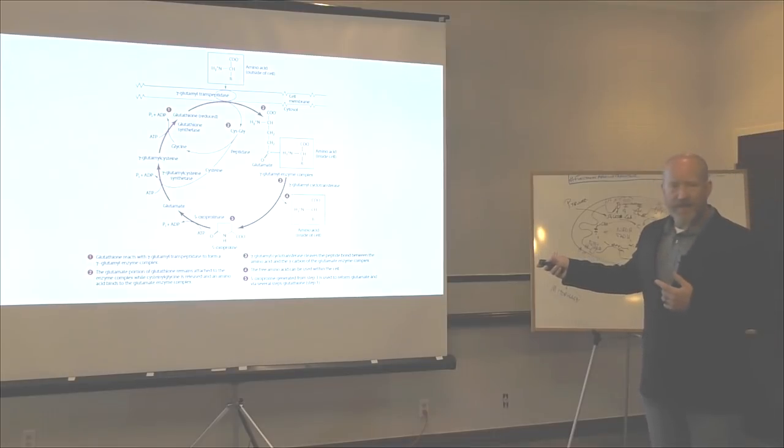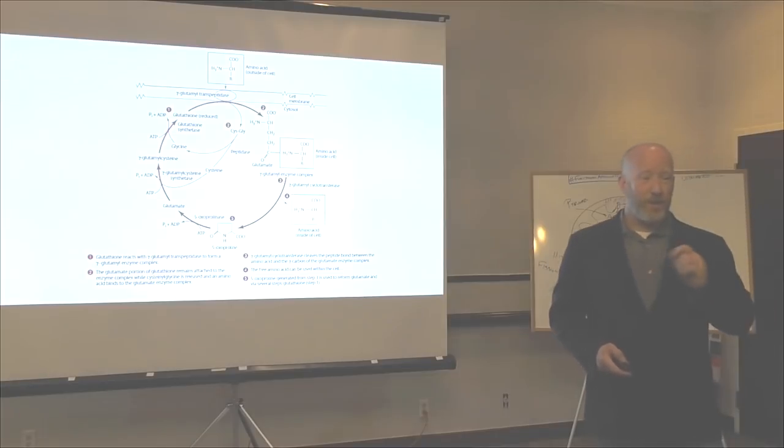So now that this amino acid is inside of the cell, the cell's happy, it gets lopped off, and then glutamate essentially comes back with cysteine and with glycine to become glutathione once again. So I show that to you because there's a very strong GGT-glutathione connection. You guys see that?